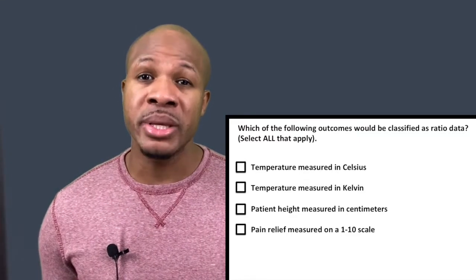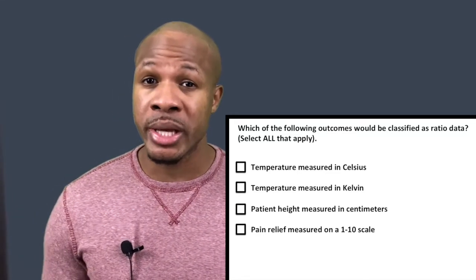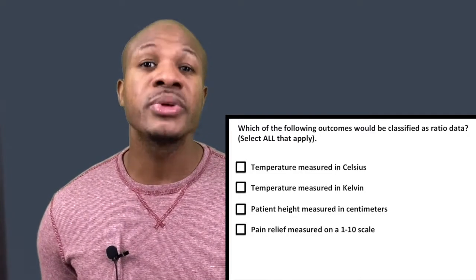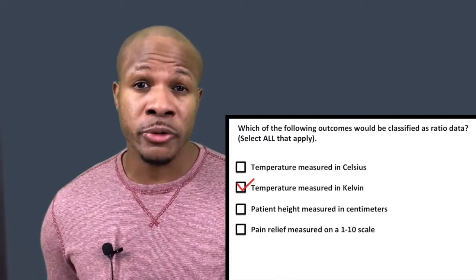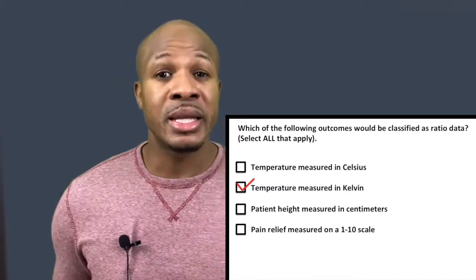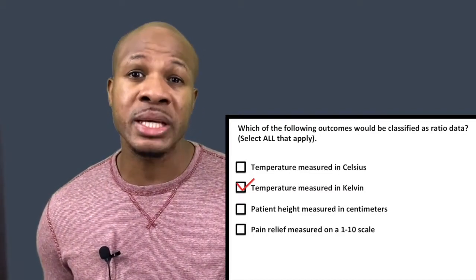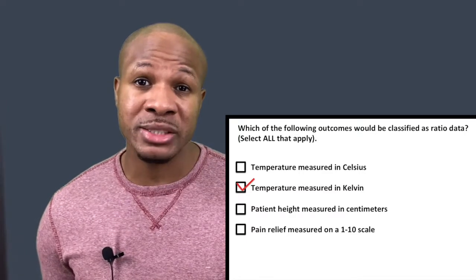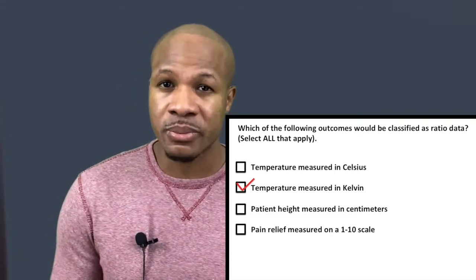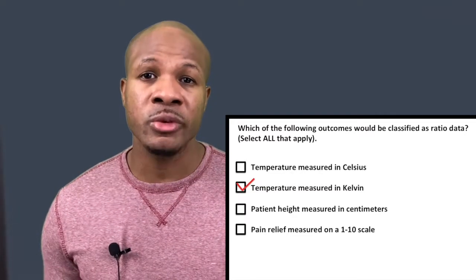Let's take a look at B: temperature measured in Kelvin. Does Kelvin have an absolute zero value? Yes, it does. Kelvin starts at zero degrees Kelvin and can go all the way up to infinity, so it's definitely continuous and it has an absolute zero. You cannot have a temperature lower than zero degrees Kelvin because zero Kelvin corresponds to zero molecular motion. Because it has an absolute zero and is continuous, temperature on the Kelvin scale would be ratio data. So B is a correct answer.